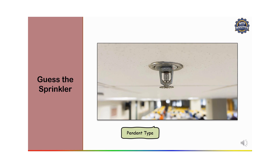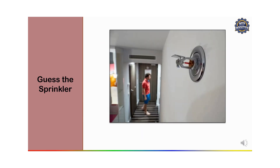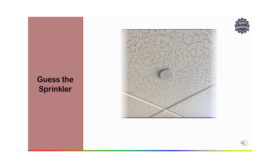Now let's identify some sprinklers from images. The first one is a pendant type sprinkler — it hangs downward from the ceiling and distributes water in a pattern that covers the area below. The next one is a sidewall sprinkler system, because it is mounted on the wall.